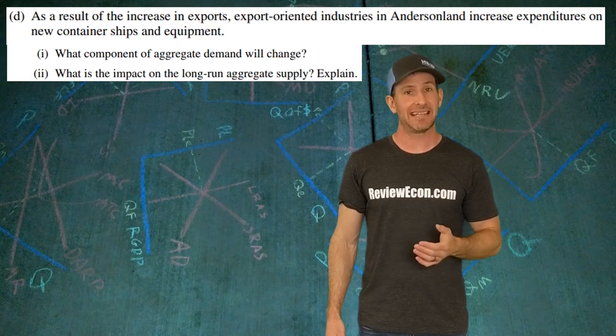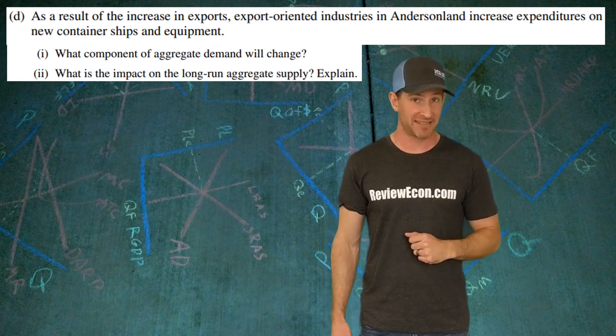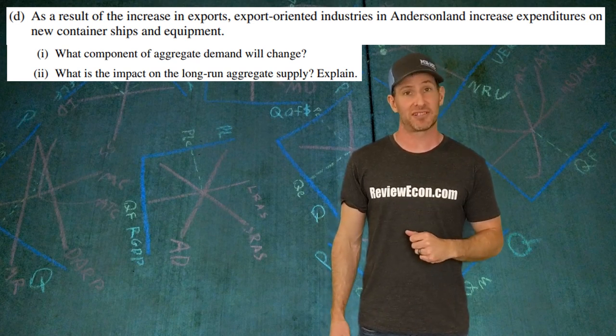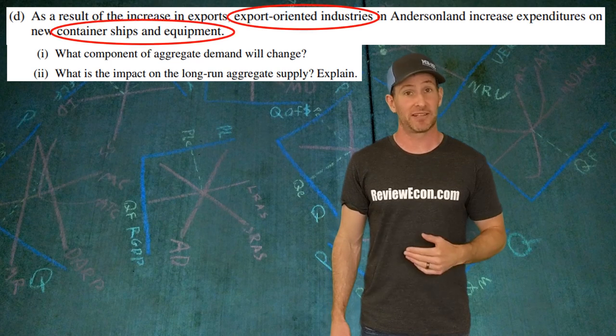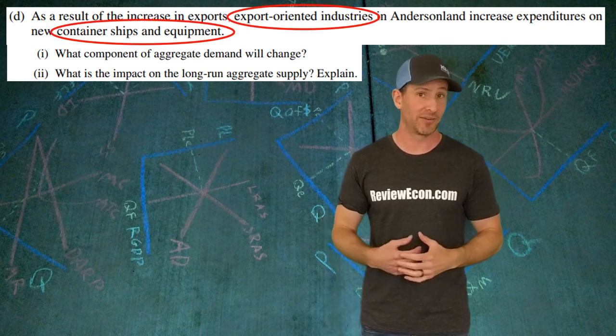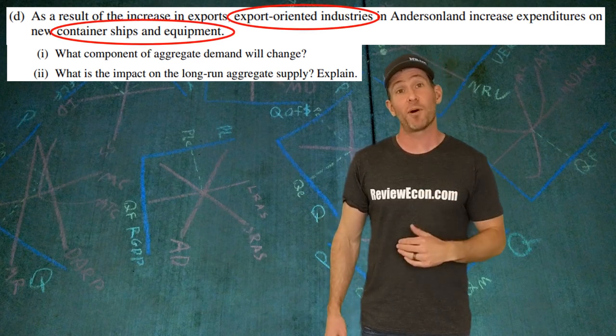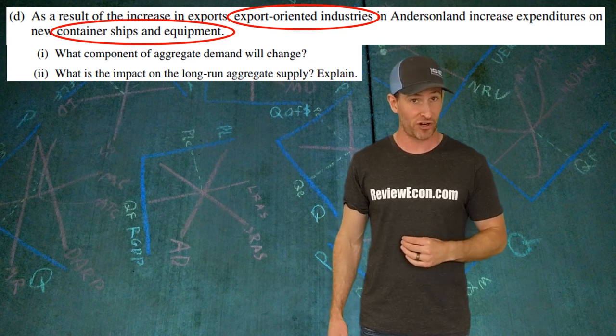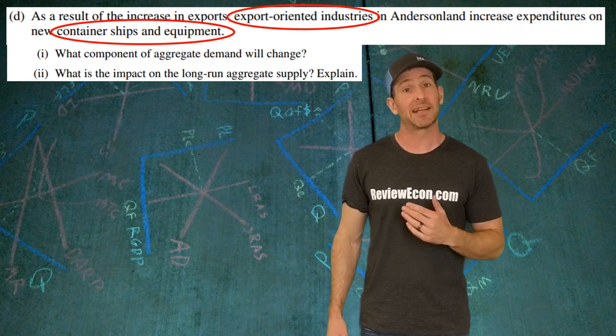Question D has two parts to it. Here, Anderson Land businesses are increasing their purchases of capital equipment. That's container ships and other equipment. What part of the aggregate demand curve is actually impacted here? As I mentioned before,